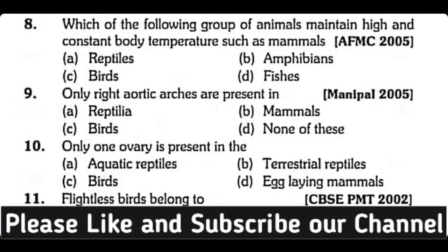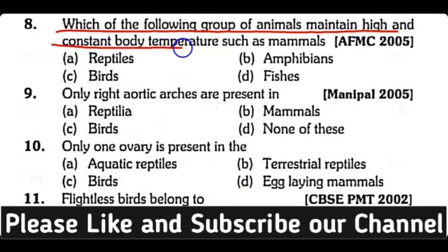Question 8. Which of the following groups of animals maintain a high and constant body temperature? Options: Mammals, Reptiles, Birds and Mammals, Amphibians, Fishes. Correct answer is option C. Birds and mammals are endotherms and can maintain their body temperature.